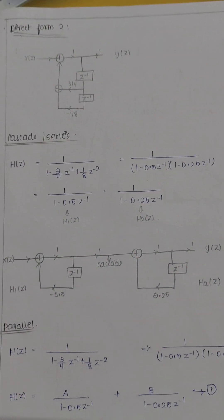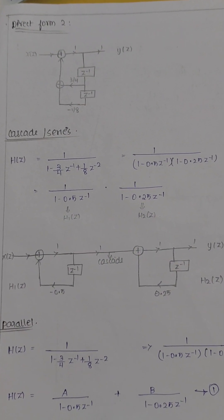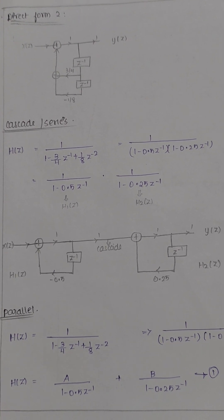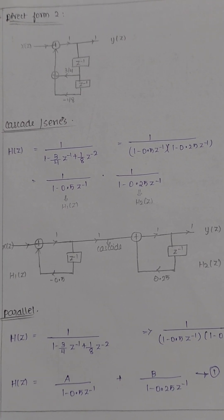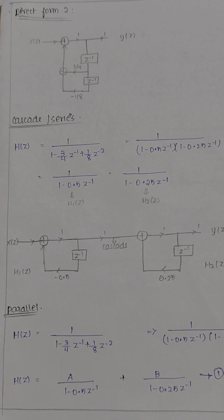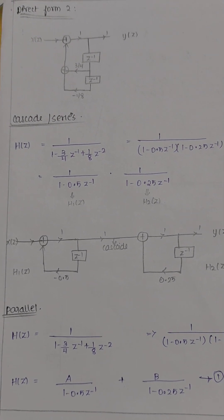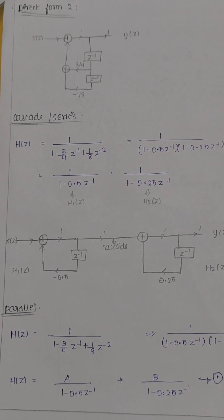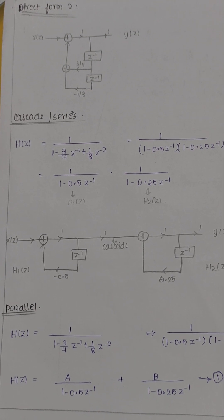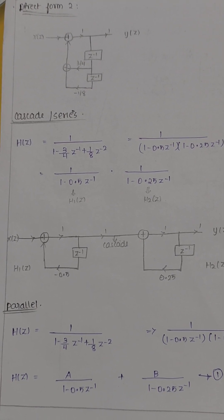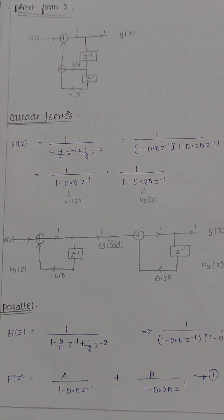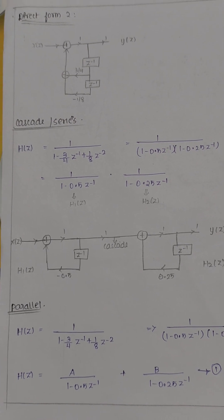Direct form 2. You have to club together both input and output. The highest order is z power minus 2. So take in the center, z power minus 1, z power minus 1. This side, the input numerator is 1. This corner, output this side, the multiplier value is 1 plus 3 by 4 minus 1 by 8. There are adders to the input x(z), output y(z).